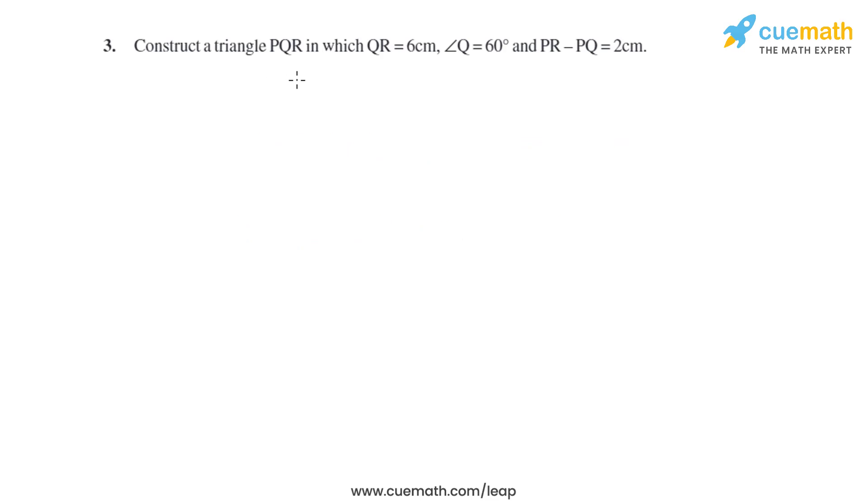Question 3 of this exercise says construct a triangle PQR in which QR equals 6 cm, angle Q equals 60 degrees, and PR minus PQ equals 2 cm.